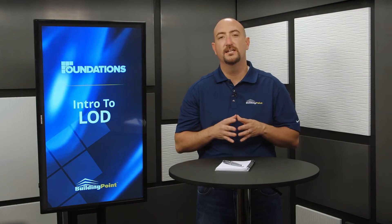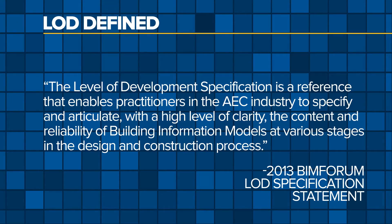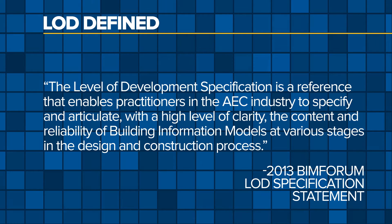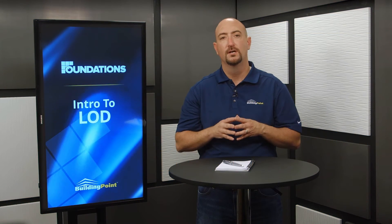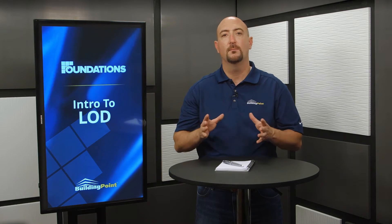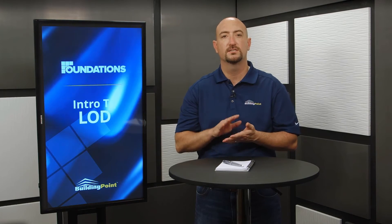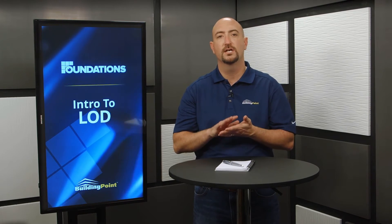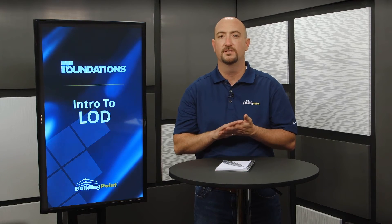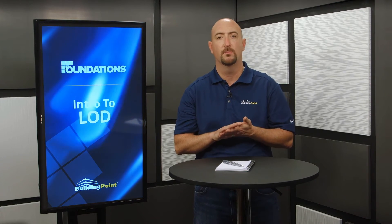As stated in the introduction, the Level of Development Specification is a reference that enables practitioners in the AEC industry to specify and articulate, with a high level of clarity, the content and reliability of building information models at various stages in the design and construction process. Simply put, this specification is a common language by which architects, engineers, contractors, and owners can convey and understand the detail level and reliability of a model.